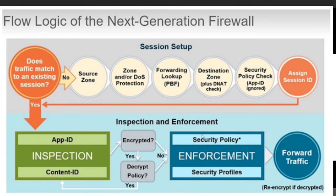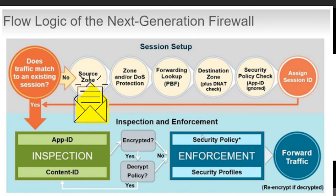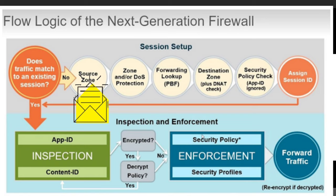The firewall then matches the packet to an existing session or connection. This check happens against the firewall's internal state or session table. If the packet does not match the internal state table, the session setup process initiates. In session setup, the first step is the source zone check — the firewall checks which zone the packet arrived from. Palo Alto firewall setup is zone-based, deployed on segmented networks using security zones to enhance security.